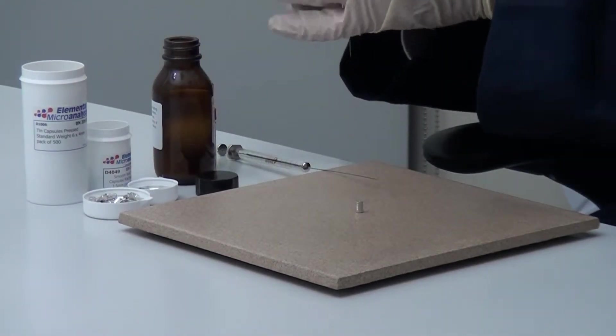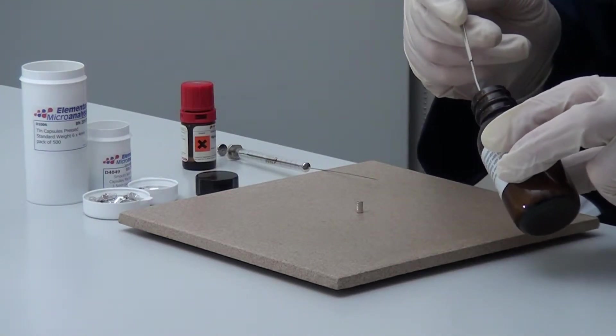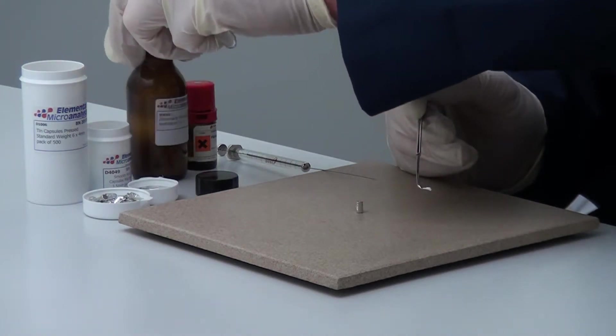For the analysis of non-volatile liquids, a simple approach is to use an inert absorbent such as glass fibre pads or Chromosorb W.